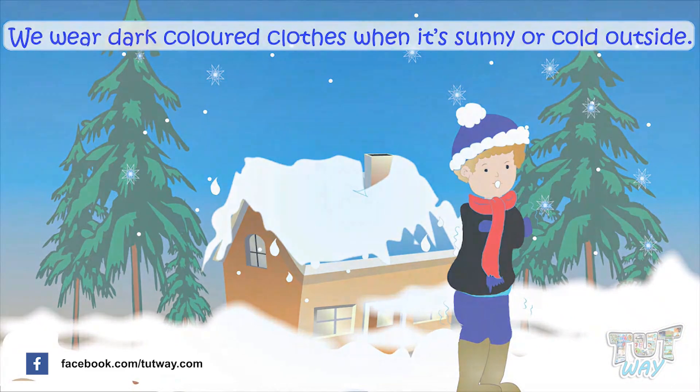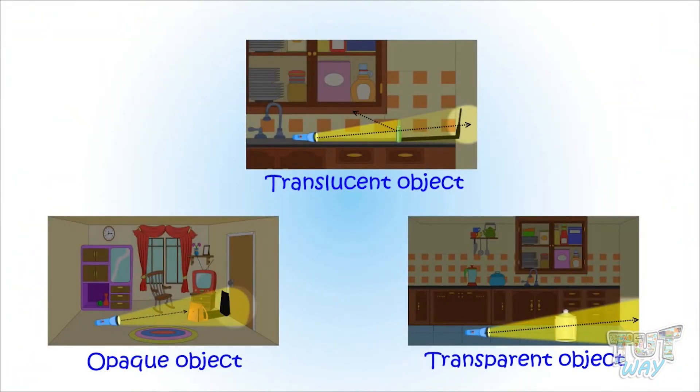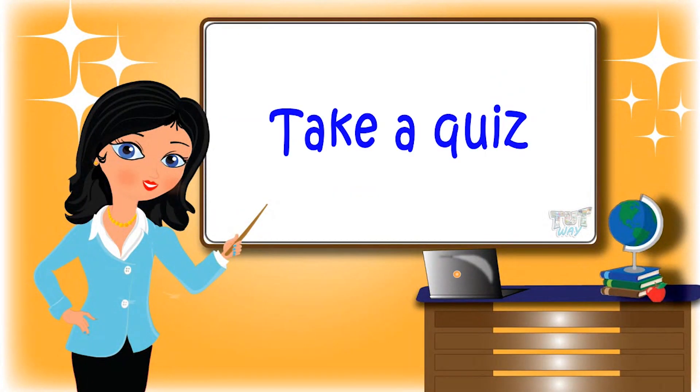So kids, today we learned how different types of objects absorb and reflect different amounts of light. Now go ahead and take a quiz to learn more! Bye bye!